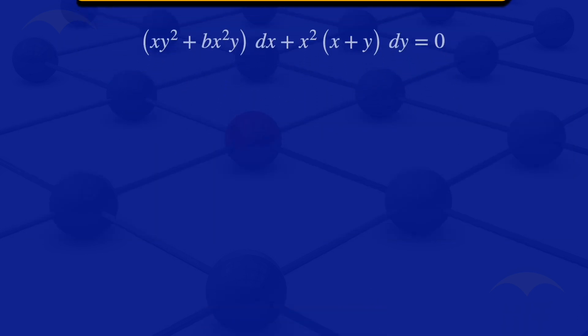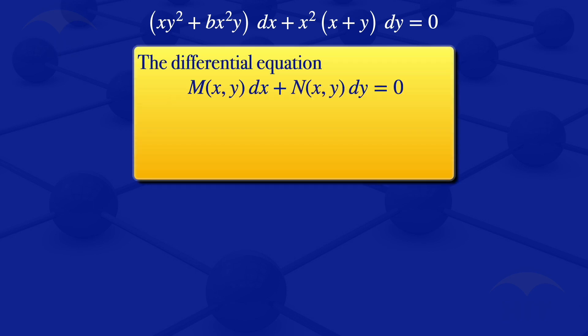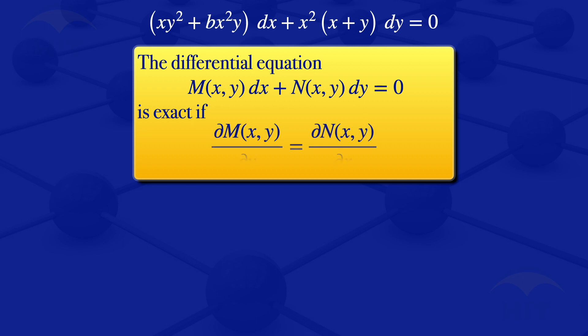Given that equation, to check if it is exact, I will look at the following. The differential equation M(x,y) dx + N(x,y) dy = 0 is exact if the partial derivative of M with respect to y equals the partial derivative of N with respect to x.